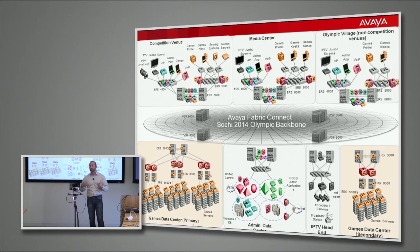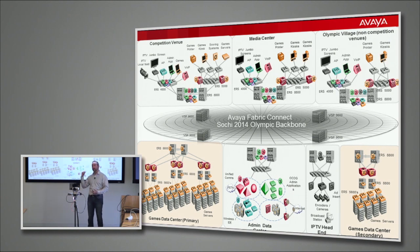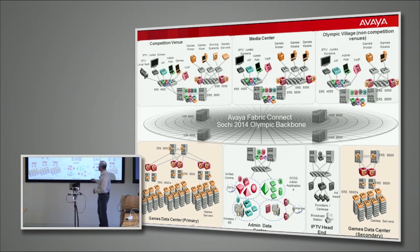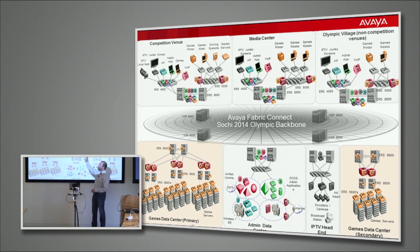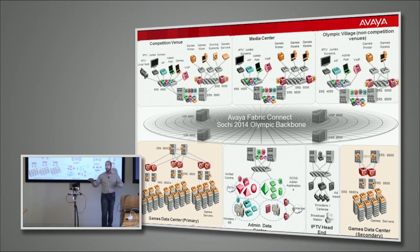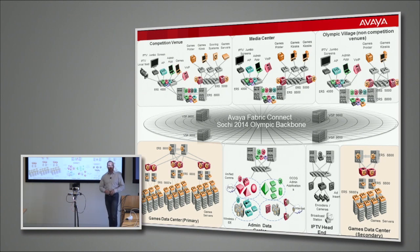This is really important for PCI and HIPAA environments. We have many networks deployed that are PCI DSS compliant because of this functionality. When we have the internet feed, we're providing internet connectivity for everyone in the Olympic family, no matter where they are in the village — coming across that VRF, locked out and hopping out.